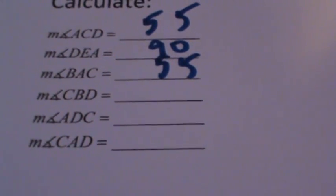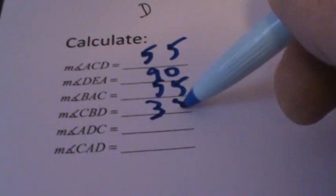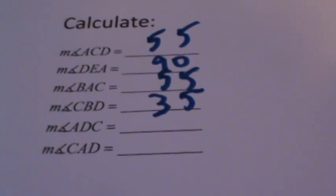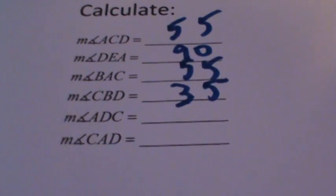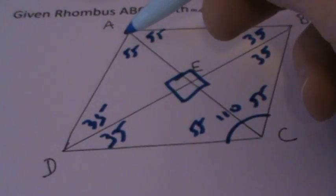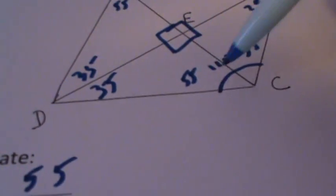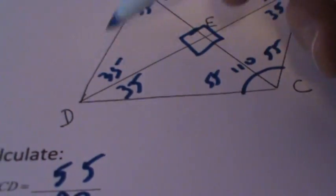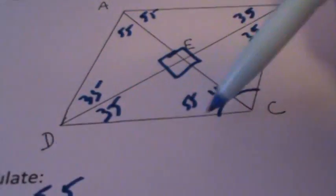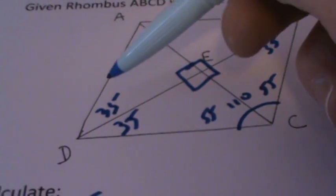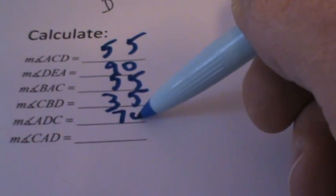The next angle to find is angle CBD, which is located on the right side — that angle equals 35 degrees. Next is angle ADC, which is the entire angle at vertex D, not just part of it. We take the sum of the two 35-degree parts and add them together to get 70 degrees for angle ADC.